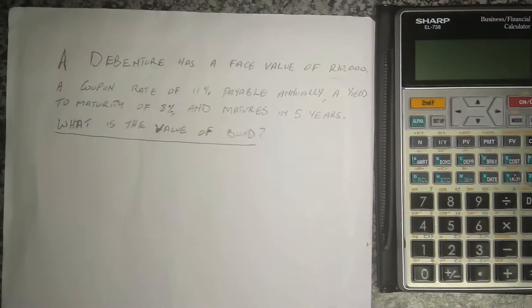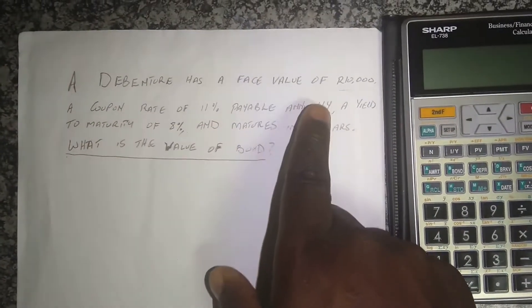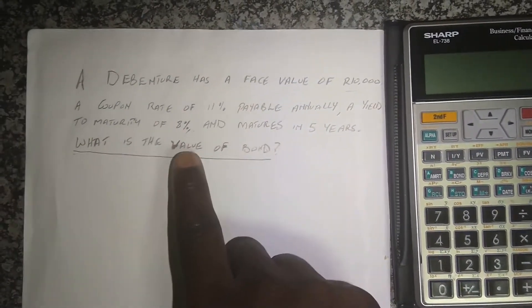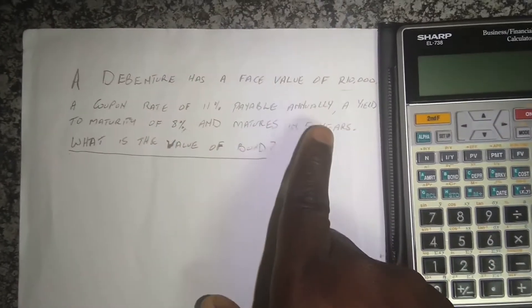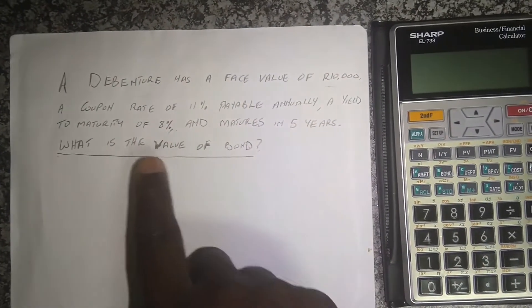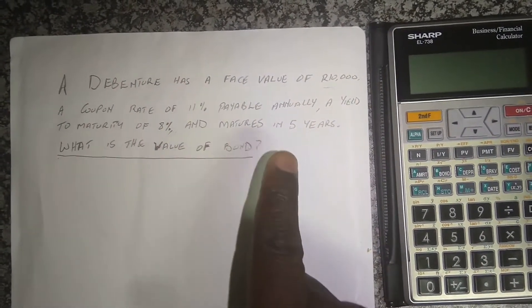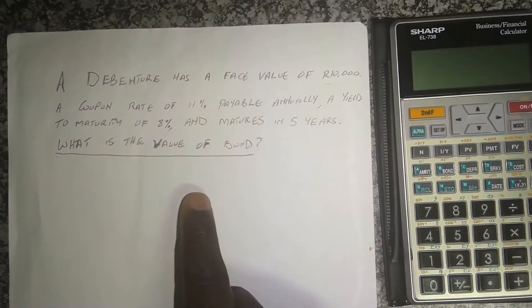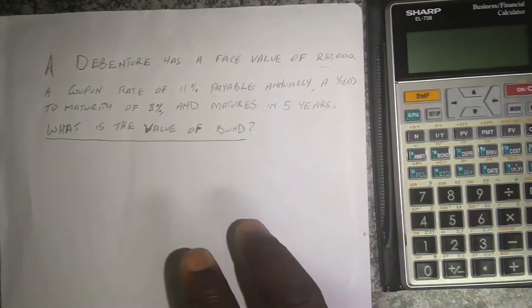But in this question we are told that the debenture has a face value of 10,000 rand, a coupon rate of 11 percent payable annually, a yield to maturity of eight percent, and matures in five years. What is the value of the bond?